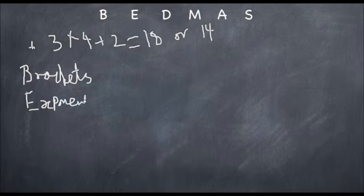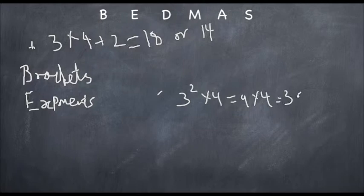So let's say you had something by the nature of 3 squared times by 4. So you do the exponents first, which will give you 9 times by 4, which would in turn equal 36.